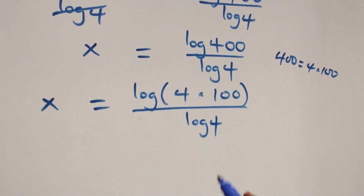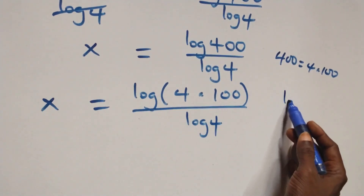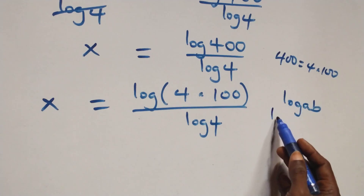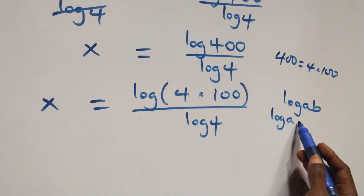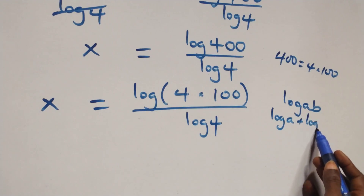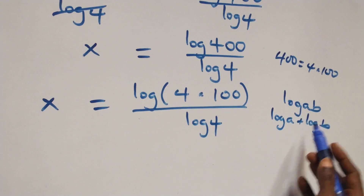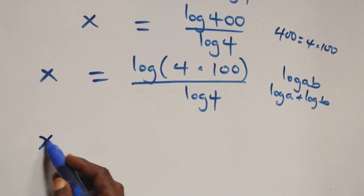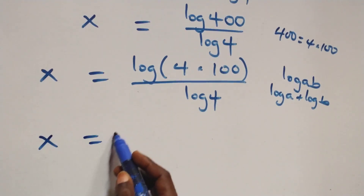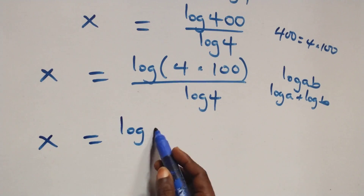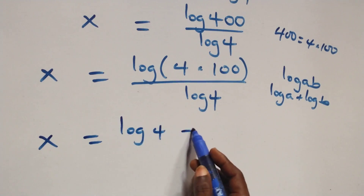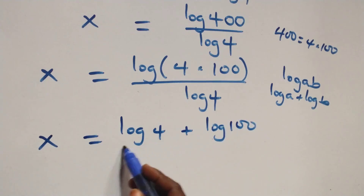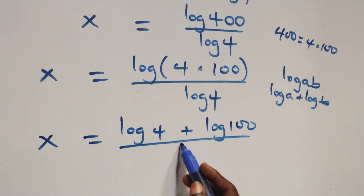This here follows the law of logarithms, where we have log of a times b, which is the same thing as log a plus log b. So what we have here becomes x equals to log 4 plus log 100 over log 4.